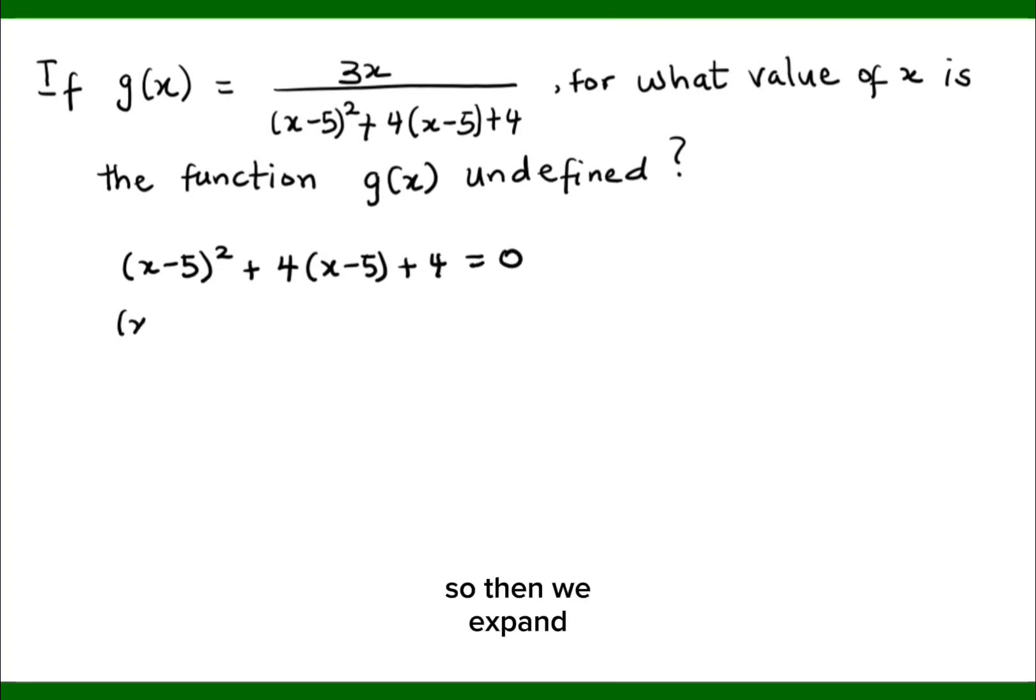So then we expand. We have x minus 5 multiplies x minus 5 plus, you expand that, 4 times x, that's 4x, then minus 20 plus 4 equals 0.